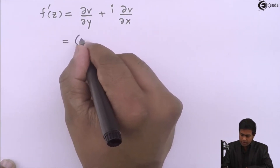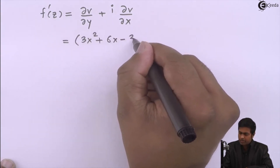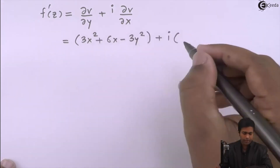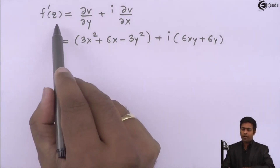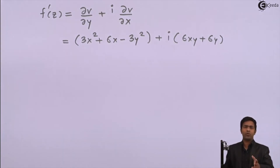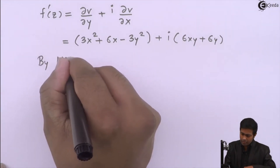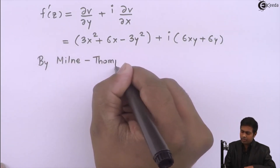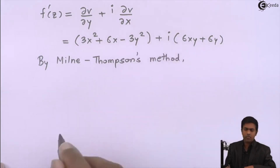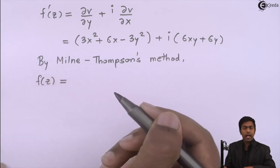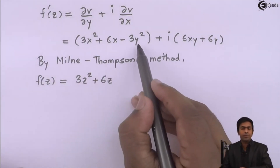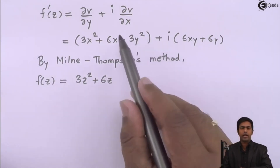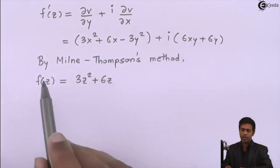Substituting the values: ∂v/∂y = 3x² + 6x − 3y², and ∂v/∂x = 6xy + 6y. So f'(z) = (3x² + 6x − 3y²) + i(6xy + 6y). This is in terms of x and y. By Milne-Thomson's method, we substitute x = z and y = 0, making the y-terms vanish. This gives f'(z) = 3z² + 6z.